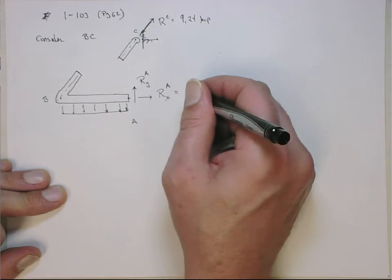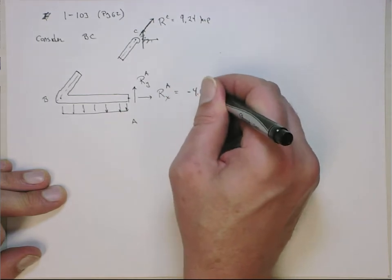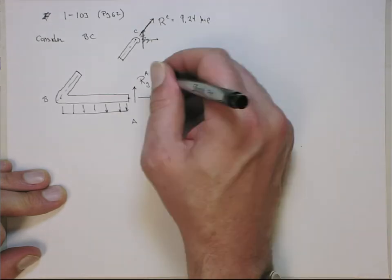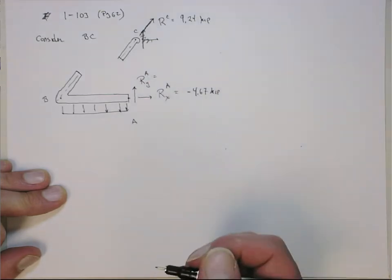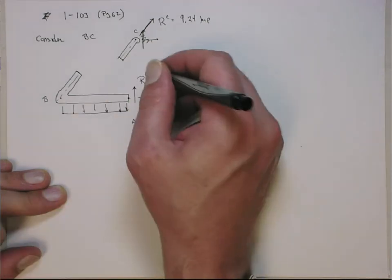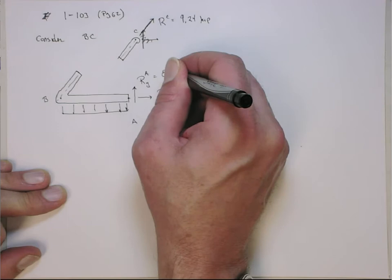The X component here is actually minus 4.67 kip, so it's actually acting in compression. And then the Y component at A is going to be 8 kip.